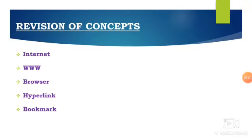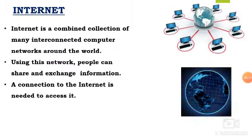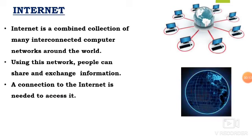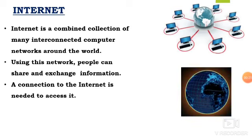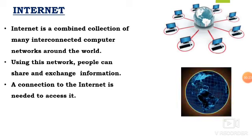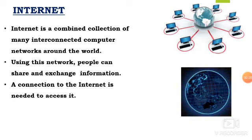As we said before, we are going to revise the concepts: Internet, www, browser, hyperlink and bookmark. So first, Internet — we already know it is a combined collection of many interconnected computer networks around the world. By using this Internet, the user can share and exchange information. The main thing you need to use the Internet is Internet access.